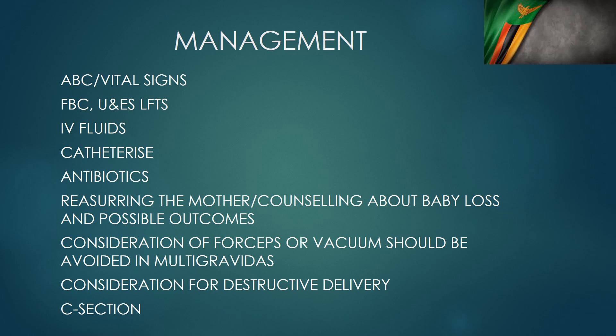We have to talk to the mother about the diagnosis respectfully, and counsel about the status of the baby — many times the baby is dead in obstructed labour, with fetal distress and very low Apgar scores. We then have to assess the mother and decide how to deliver her. Are we going to use forceps? This decision should be made at a very senior level, because in an obstructed labour you really don't want to use forceps or vacuum. They are mentioned here only to be discouraged. The contractions in multigravidas have already tried to the maximum to get this baby out, so if it's not coming out, we have to try another method.